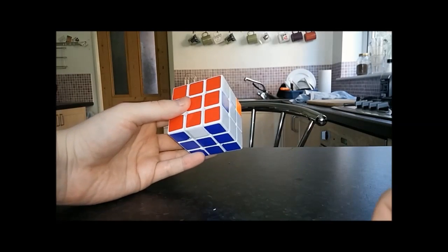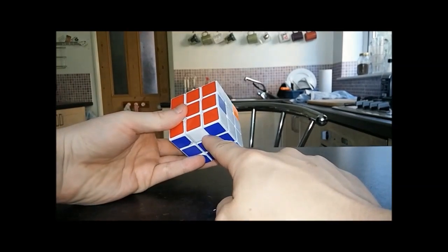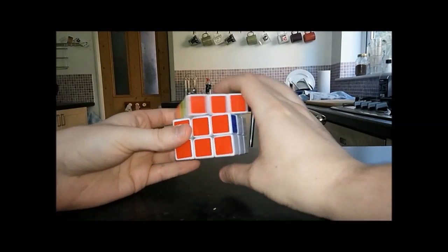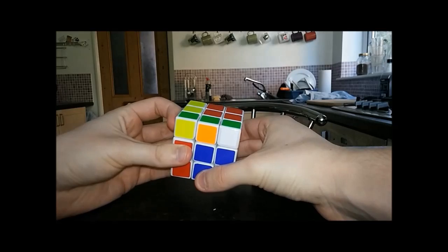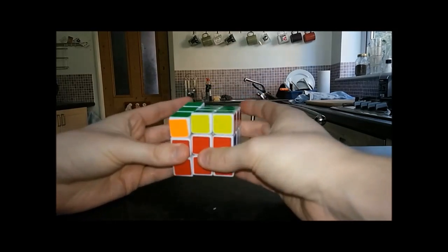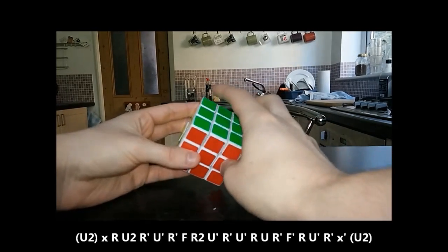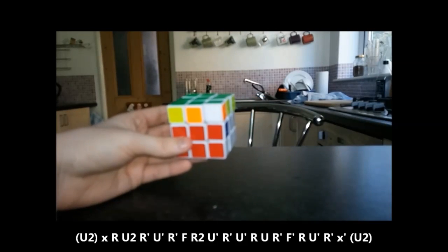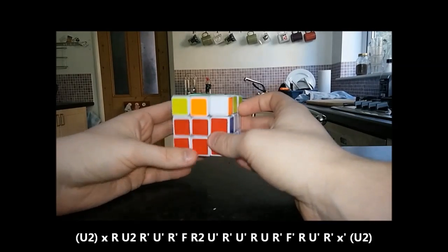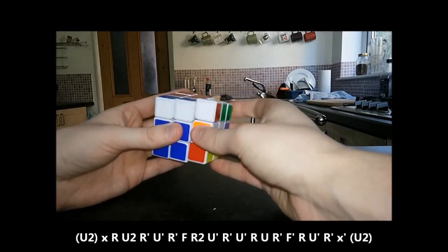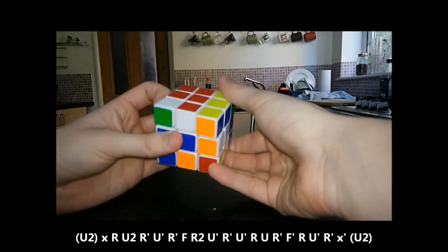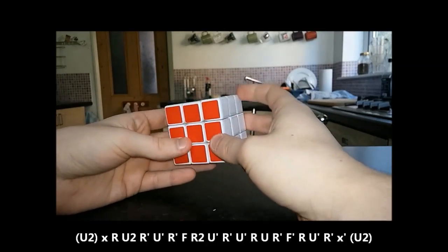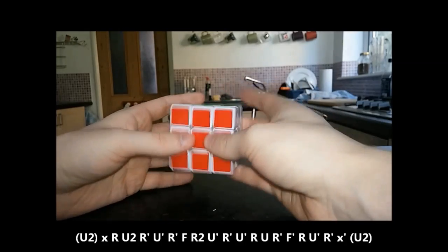For this case there's a couple of different options. It swaps this sticker and this sticker and these two corners. You can set it up to an R perm like so, but what I do is I solve it directly by bringing these two corners to the front and solving it like this. Sort of a modified TJ perm thing.